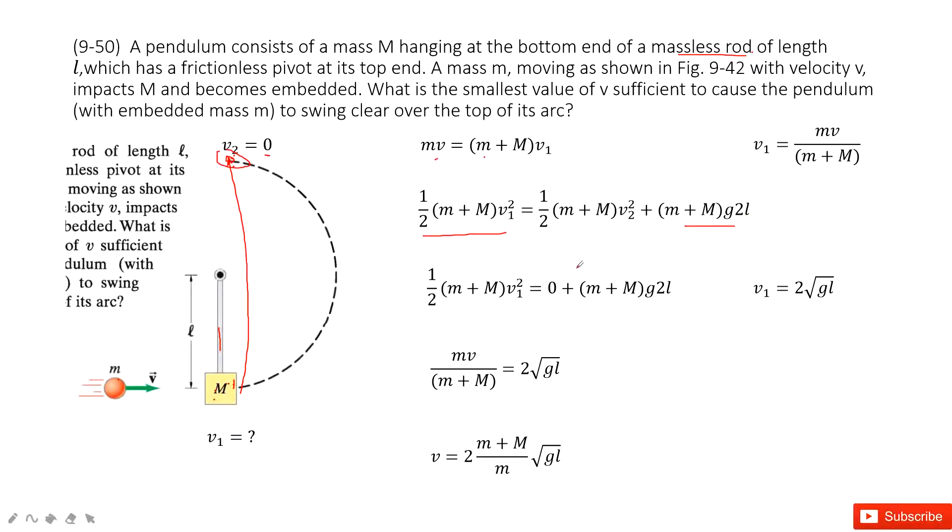Now we input the known quantities. v2 is 0, and then we can get the equation for v1 is 2√(gl).